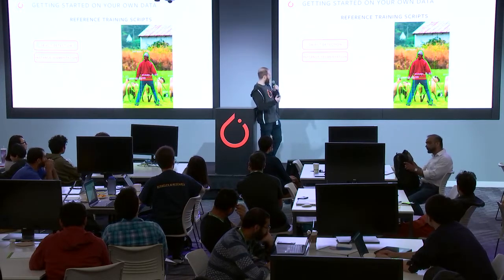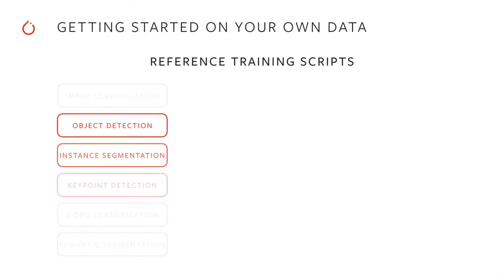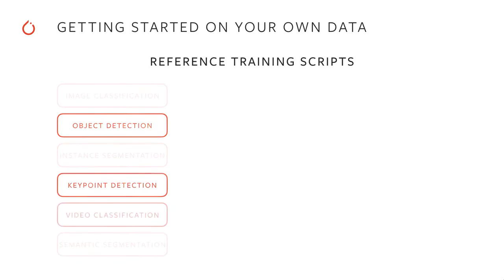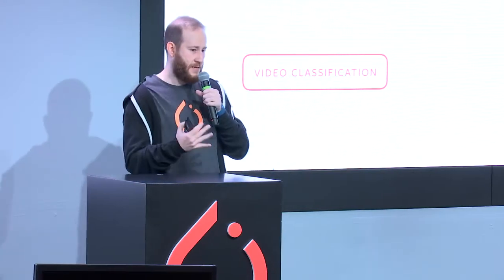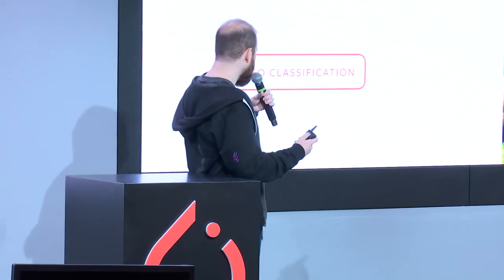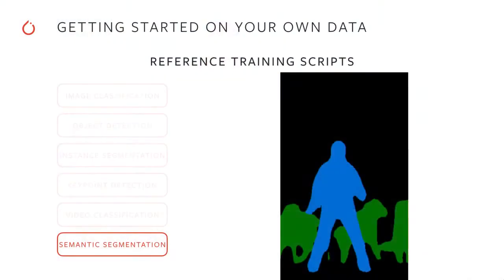We also have models for object detection and segmentation pre-trained on COCO, and the same for keypoint detection. For video classification, recently added in the 0.4 release out today, we have action recognition from videos — 400 classes trained on Kinetics 400, with a few pre-trained models to choose from depending on whether you want accuracy or speed. Segmentation is also trained on COCO.